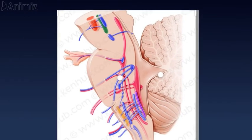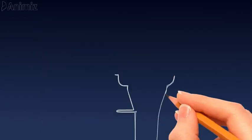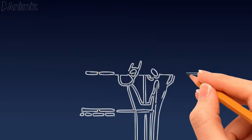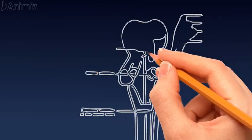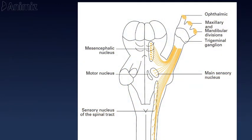There are three sensory nuclei and one motor nucleus, all originating in the central nervous system across the midbrain, pons, and medulla. The sensory nuclei are located in the midbrain, pons, medulla, and upper part of the spinal cord. In order, they are the mesencephalic nucleus, main sensory nucleus, and spinal nucleus.